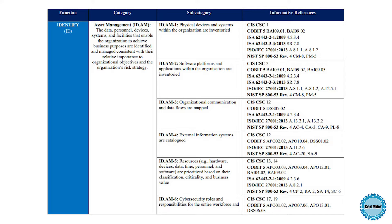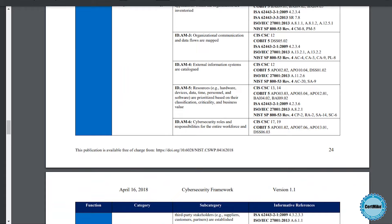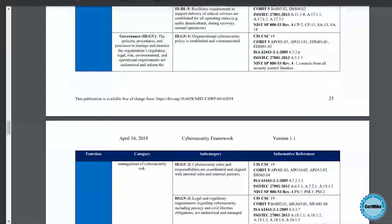The framework then goes into a much higher level of detail when you start breaking out the subcategories. In the Asset Management category of the Identify function, we have six subcategories. They cover things like the inventory of physical devices and systems, the inventory of software platforms and applications, how we map organizational communication and data flows, and so on. There are quite a few references to other standards for each one of these subcategories for people looking for more detail on how to achieve these goals.